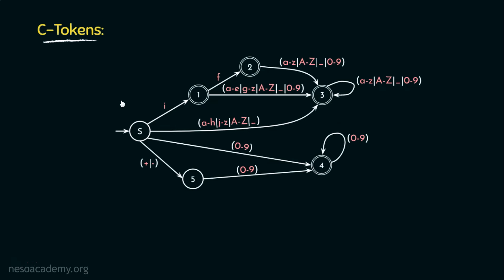The equivalent DFA will recognize the keyword 'if', identifiers, and integers. Starting from the initial state S, seeing the letter 'i' we move to state 1, and from there seeing 'f' we move to state 2. Since state 2 is a final state, stopping here means the DFA has recognized the input lexeme as the keyword token 'if'.